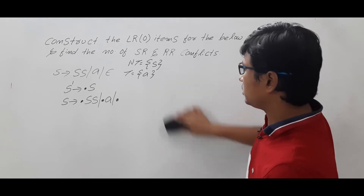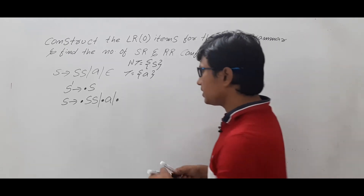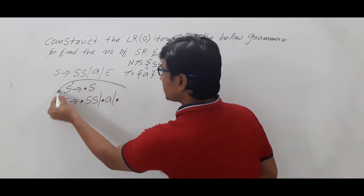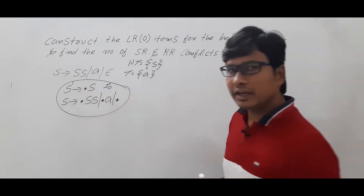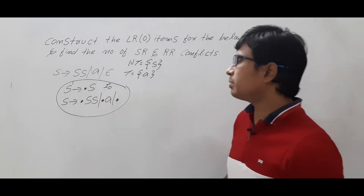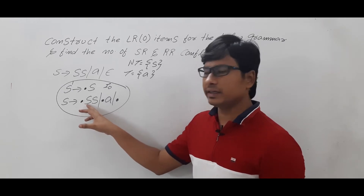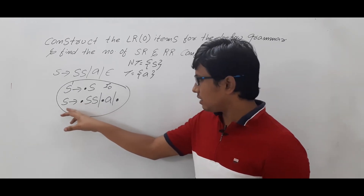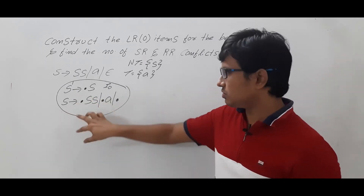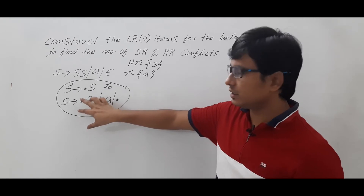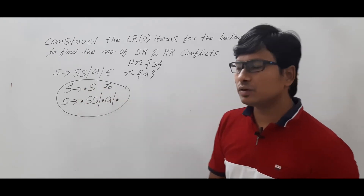I am writing the reduced move there. Is it completed — the construction of item number I0? Yes. A lot of people will think that after the dot there is an S, so I need to write the same S production again. We already have it written. So we have completed the I0 item.